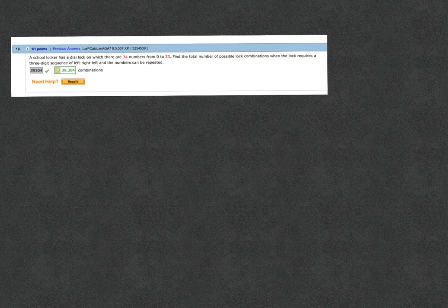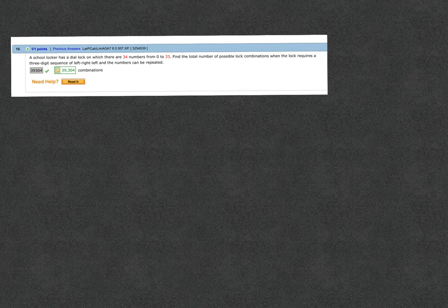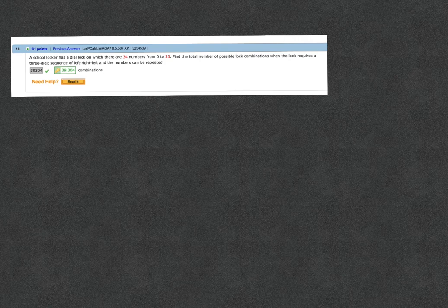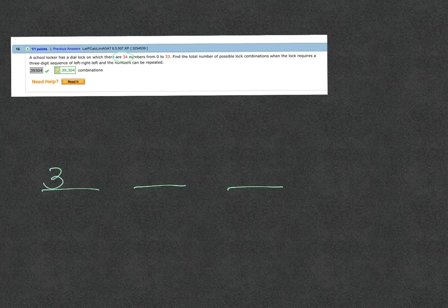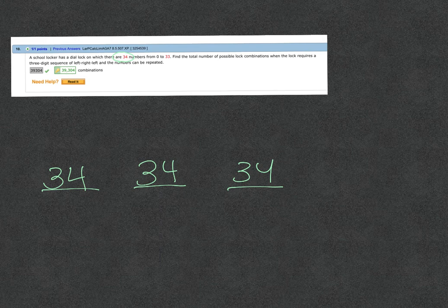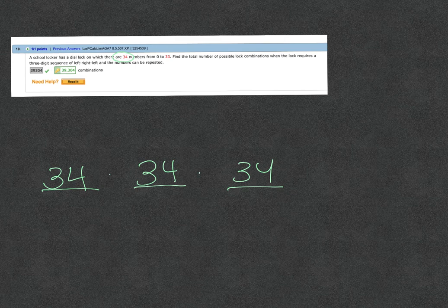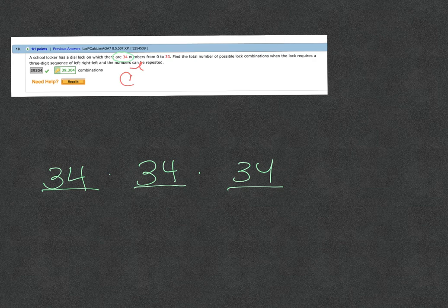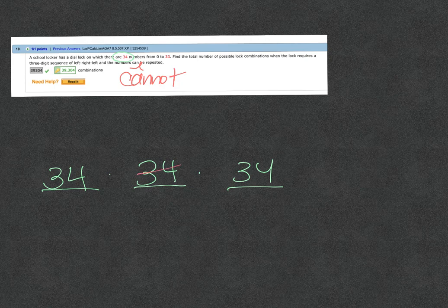10 says the school locker has a dial lock on which there are 34 numbers from 0 to 33. Find the total number of possible lock combinations when the lock requires a three-digit sequence from left to right. And the numbers can be repeated. So three digits, where the first one would be from 0 to 33, so there's 34 options there. And then that can repeat, so it's 34, 34, 34. So if it had said it cannot repeat, how does that change this? So look for verbiage like that. Those are big standardized test questions.